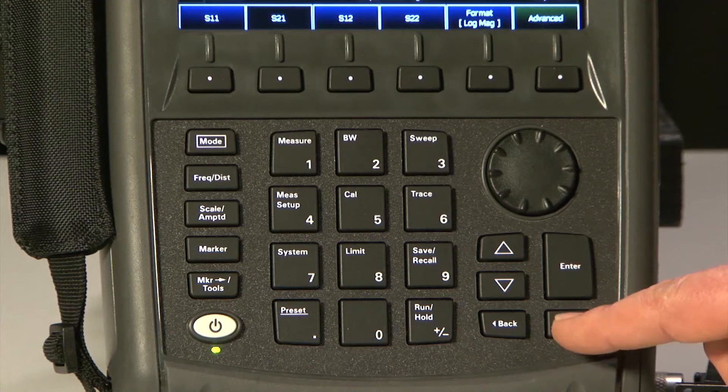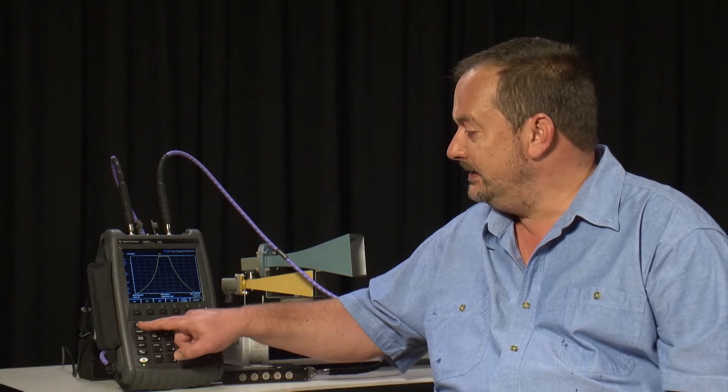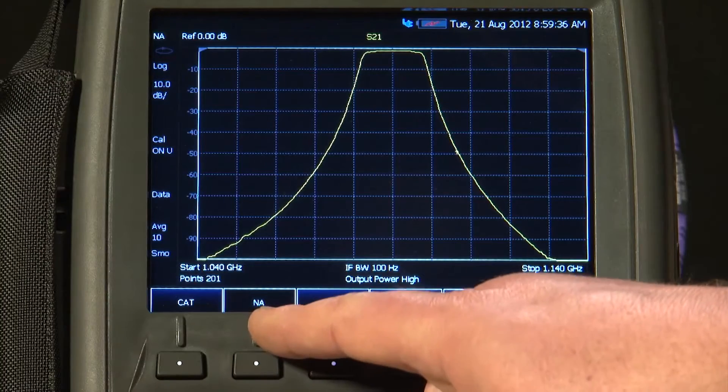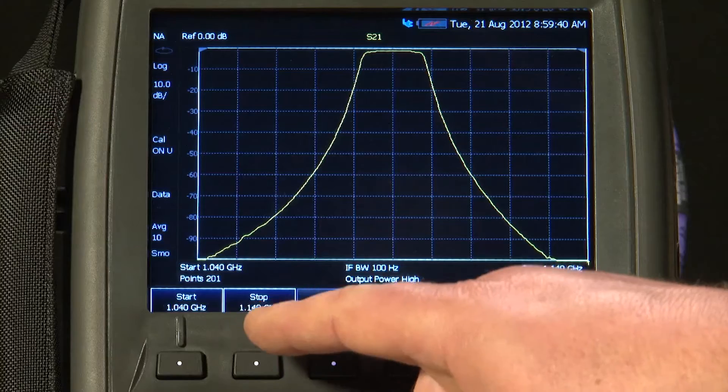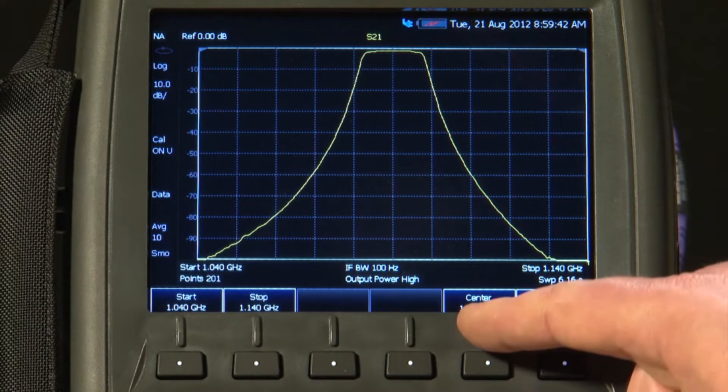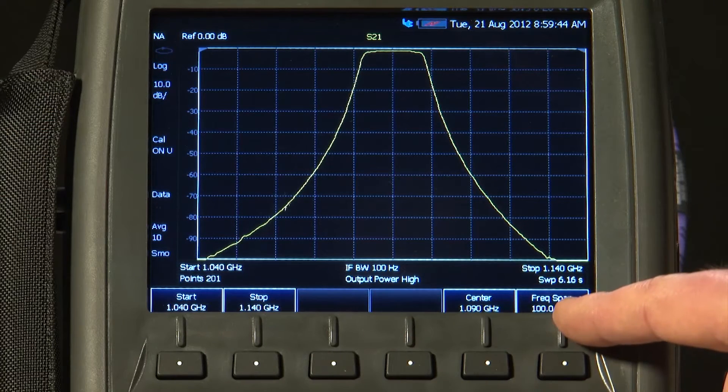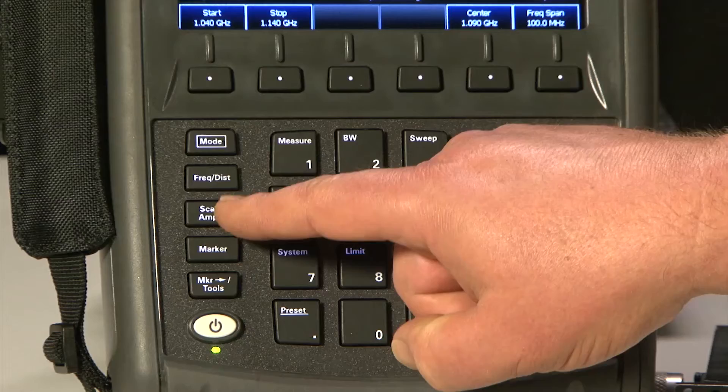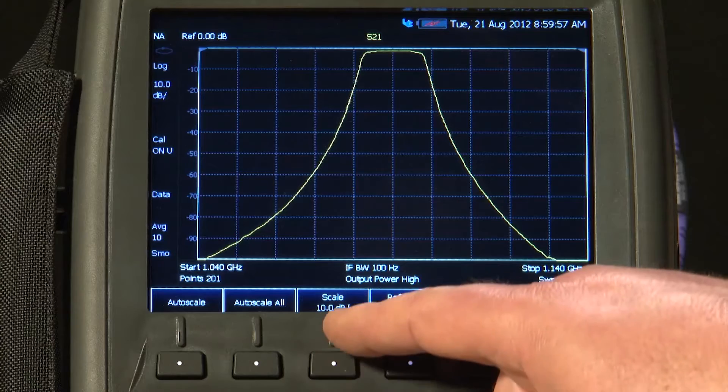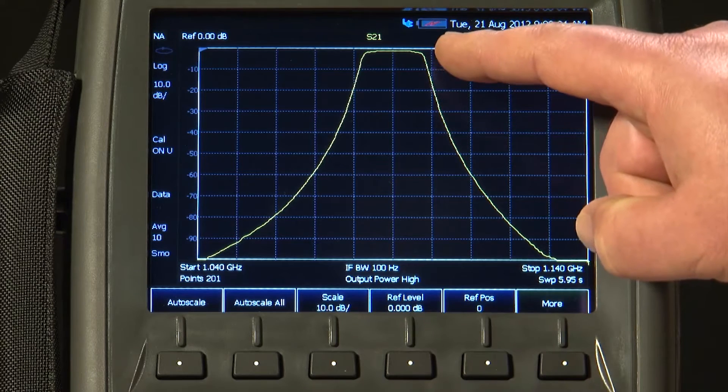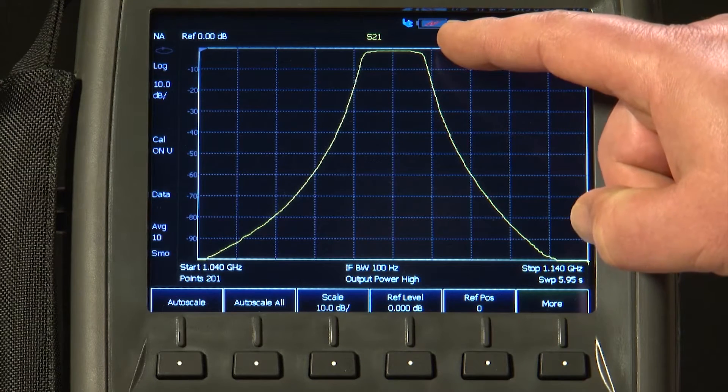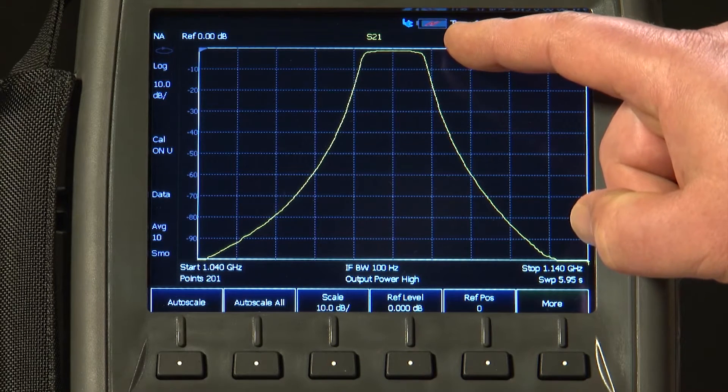I will press Escape. So, using the Mode button, I have selected Network Analysis. And using the Frequency button, I have set either a Start and Stop or a Center and Span for the frequency range. And by pressing the Scale Amplitude button, I have set a scale of 10 dB per division and a reference level of 0 dB. So, the top reference line of the display is showing 0 dB insertion loss.